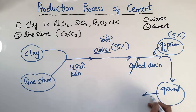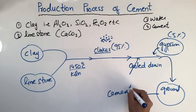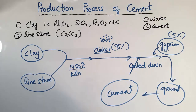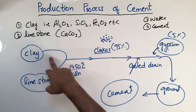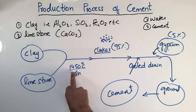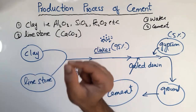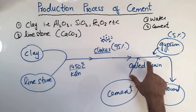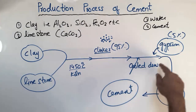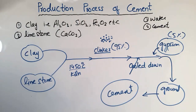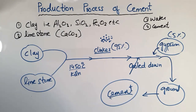Grinding means the material is ground by machines into very small particles, and after this grinding we get the final cement. In summary: the two materials — clay and limestone — are mixed together and heated in the kiln at 1450°C. Clinker is formed, cooled down, gypsum is added, and then it is ground by machines into fine particles to produce cement.